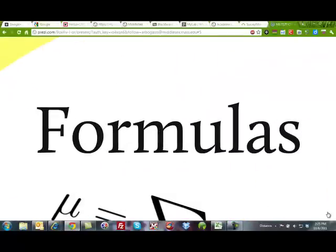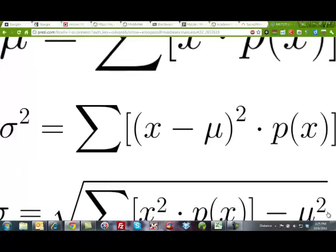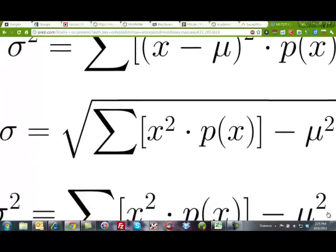When we deal with these probability distributions, we're going to create formulas. The formulas are the same ones we used before. We have the mean. The mean is the sum of the x's times the probabilities. Then we have our variance, which is we take our x, we subtract off the mean, we square it, multiply it by the probability, and add all those up. To find our standard deviation, we can take the square root of that, or we can do x squared times the probability of x minus mu squared. This is what our computer and our calculators do.